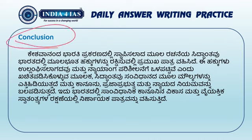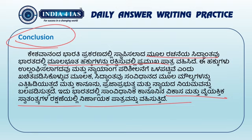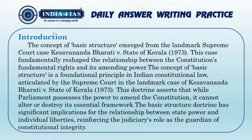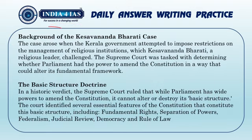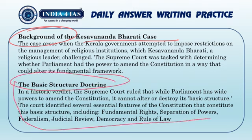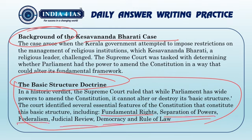In conclusion, in the case of Kesavananda, you will be able to understand the protection of fundamental rights. There are a few examples of basic structure elements: fundamental rights, separation of powers, federalism, judicial review, democracy and rule of law.